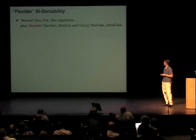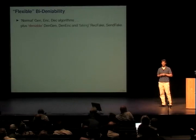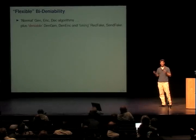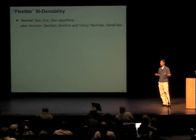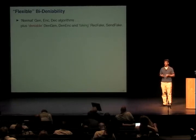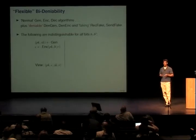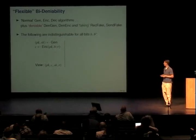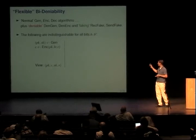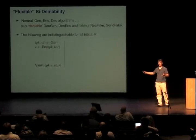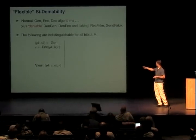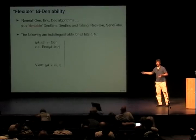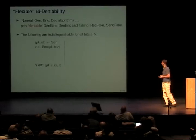So this is the model we ask for — flexible bi-deniability. As usual, we have three algorithms: key generation, encryption, and decryption. These three by themselves form a valid encryption scheme — decryption is correct, it's semantically secure, and so forth. On top of those, we have deniable algorithms: a deniable key generator, a deniable encryption algorithm, and corresponding faking algorithms. For the security experiment, for any two message bits B and B-prime, the left experiment is: generate a key, encrypt bit B, and then the coercer comes along and says 'give me your keys and coins.' It's enough to give the coercer SK and R, because he can derive PK and C from that.